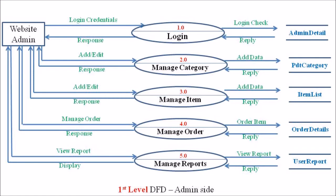These are the different processes in the level 1 DFD of an online shopping portal. Each of these five processes — login, manage category, manage item, manage order, and manage reports — can be expanded in the level 2 DFD to represent all individual sub-processes and data flows available in the system.